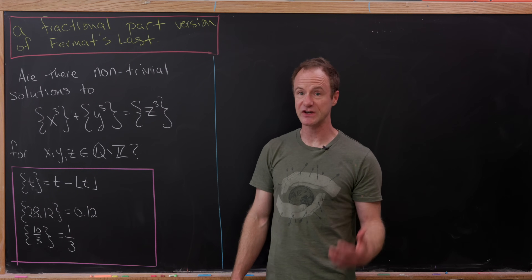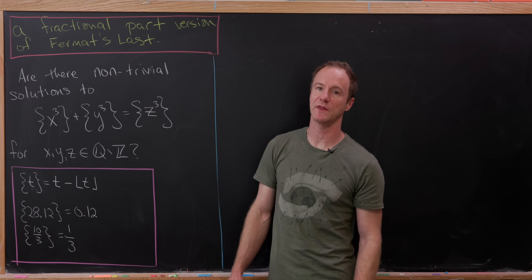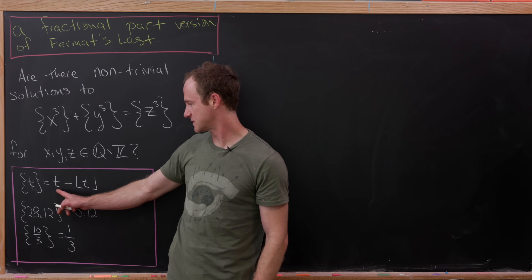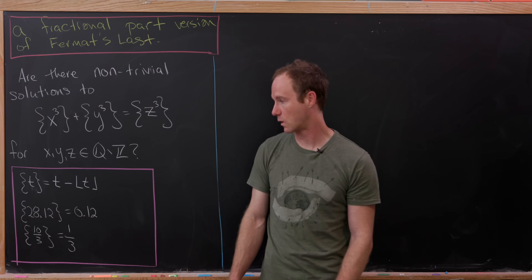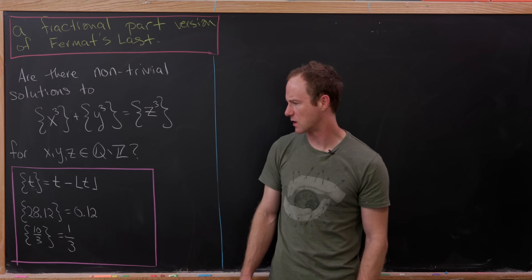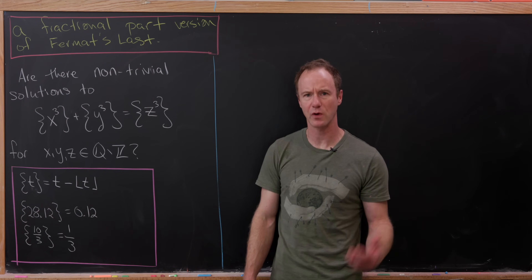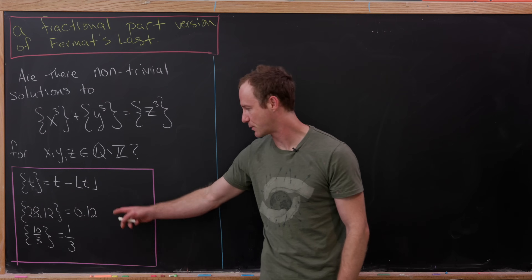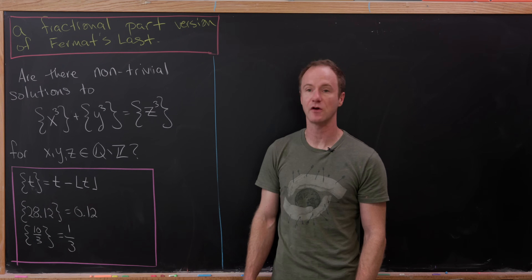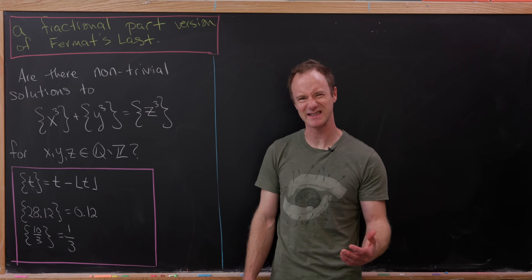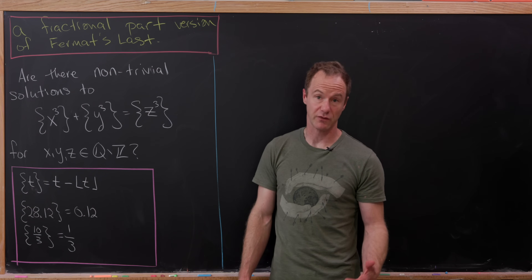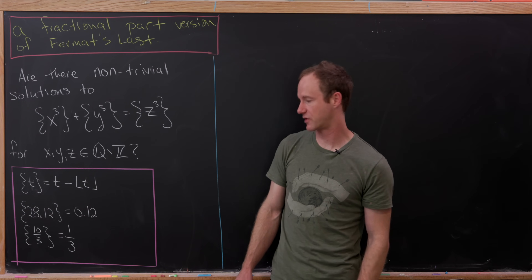The fractional part is the difference between the number and its floor. For instance, the fractional part of 28.12 is 0.12. The fractional part of 10/3 is 1/3 because that's the same thing as 3 plus one third.